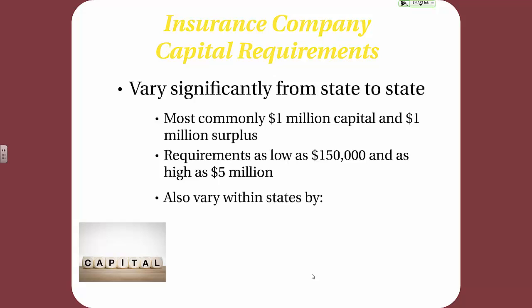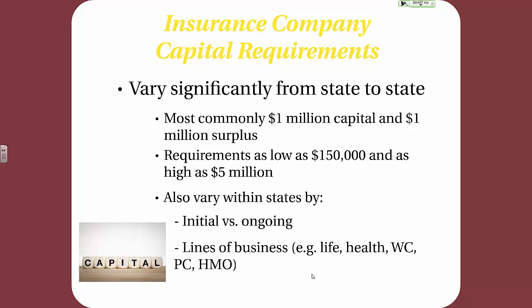Capital requirements also vary within states between initial versus ongoing requirements — meaning the amount of capital required when first beginning operations versus after being in business three, five, or more years. Capital requirements vary in most states based on line of business — for example, whether they are life, health, workers' comp, property and casualty, or an HMO. Finally, capital requirements can vary depending on how the insurance company is organized: stock, mutual, or reciprocal. Only stock companies have capital requirements, whereas mutual, reciprocal, and stock companies all have surplus requirements.